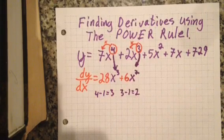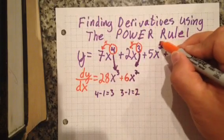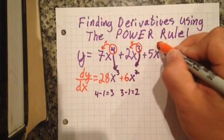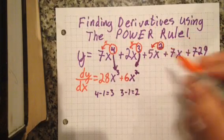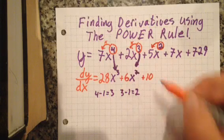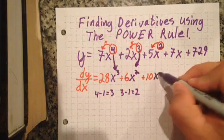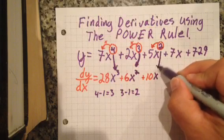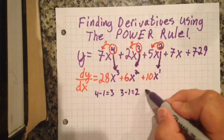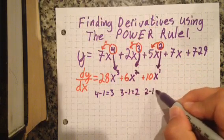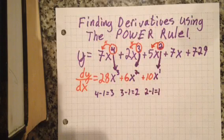Use the power rule again. 2 times 5, that's going to give me 10x to what power? The first power this time, because 2 minus 1, lo and behold, that equals 1.